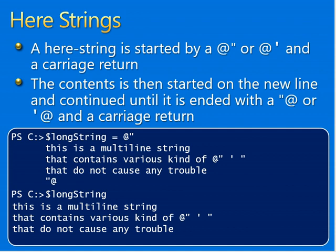The content of the here-string is all of the lines between the beginning and the ending code, but not the lines the codes are on. Because of the fancy opening and closing code sequence, other special characters that would cause problems in a regular string are fine here. This makes it easy to generate string data without having quoting errors. Here is a more elaborate example.